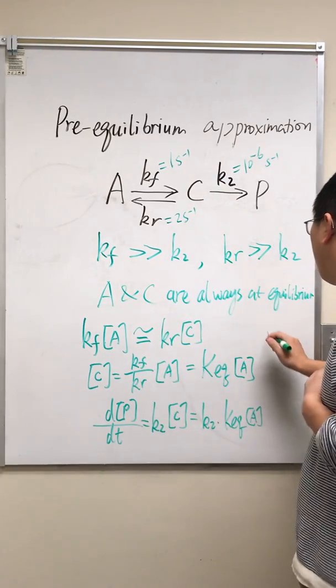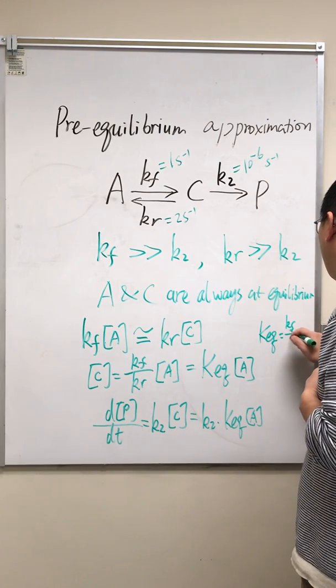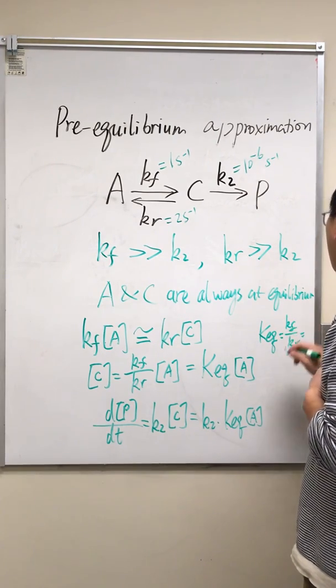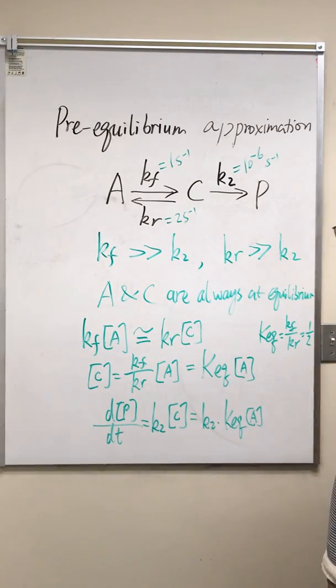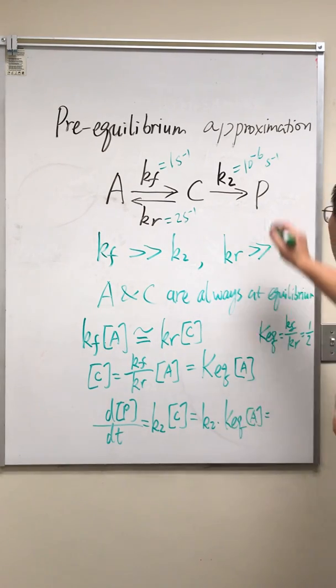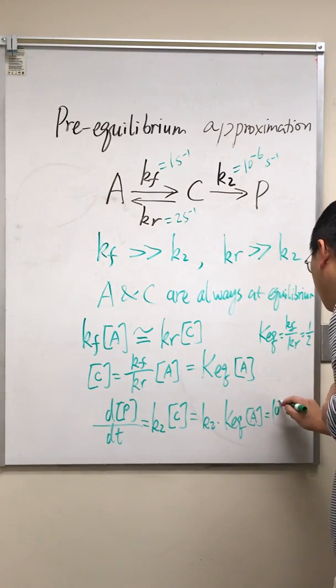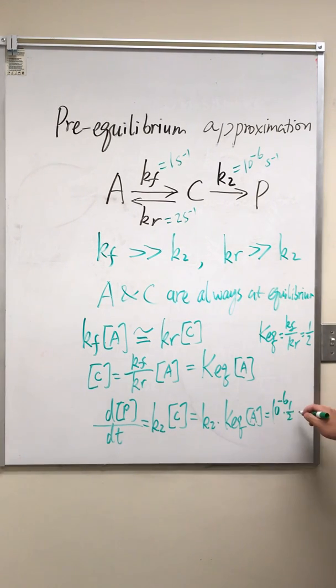Now we're going to use these numbers. So KEQ equals KF over KR. KF is 1, KR is 2, just 1 half. And we plug it in here, it's going to be just K2 times 1 half times A.